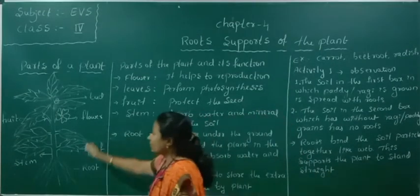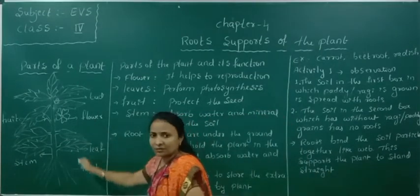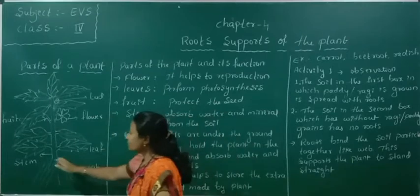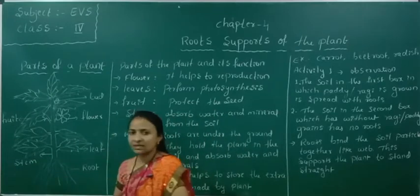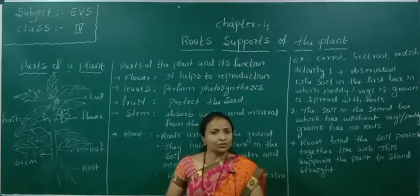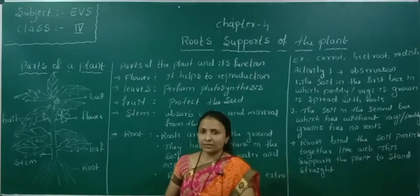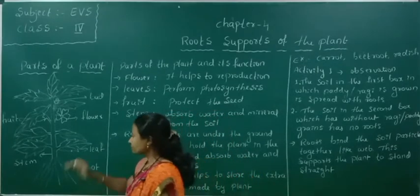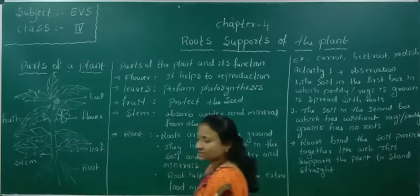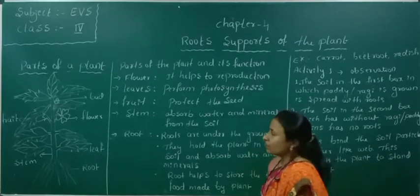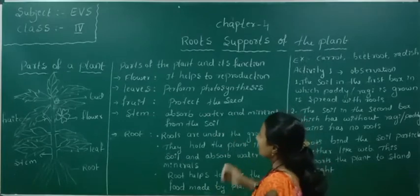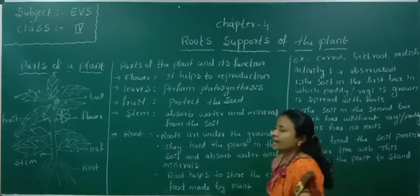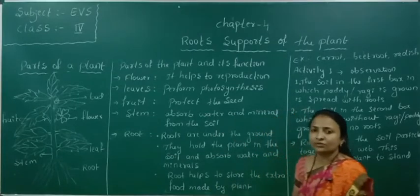We can study all these parts of the plant. Stems are generally brownish, gray, or green in color. Now we will study the parts of the plant and their functions.